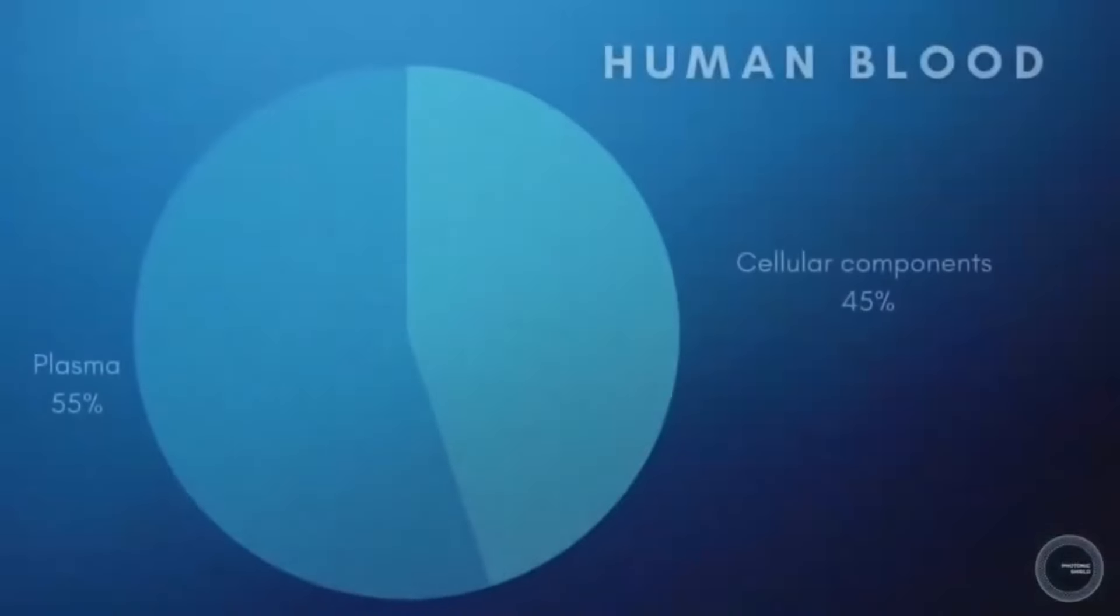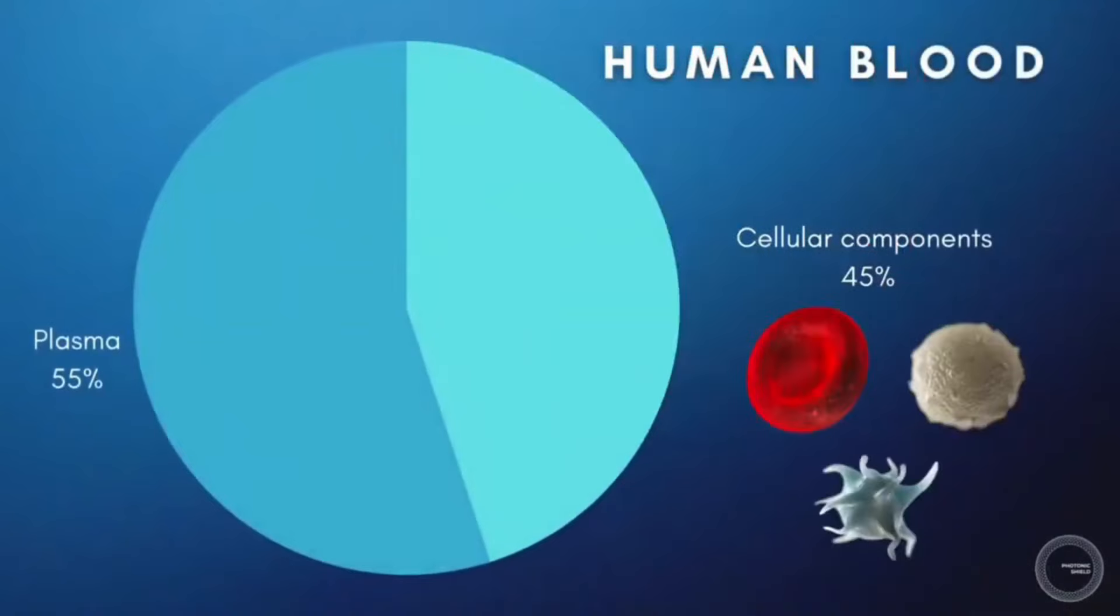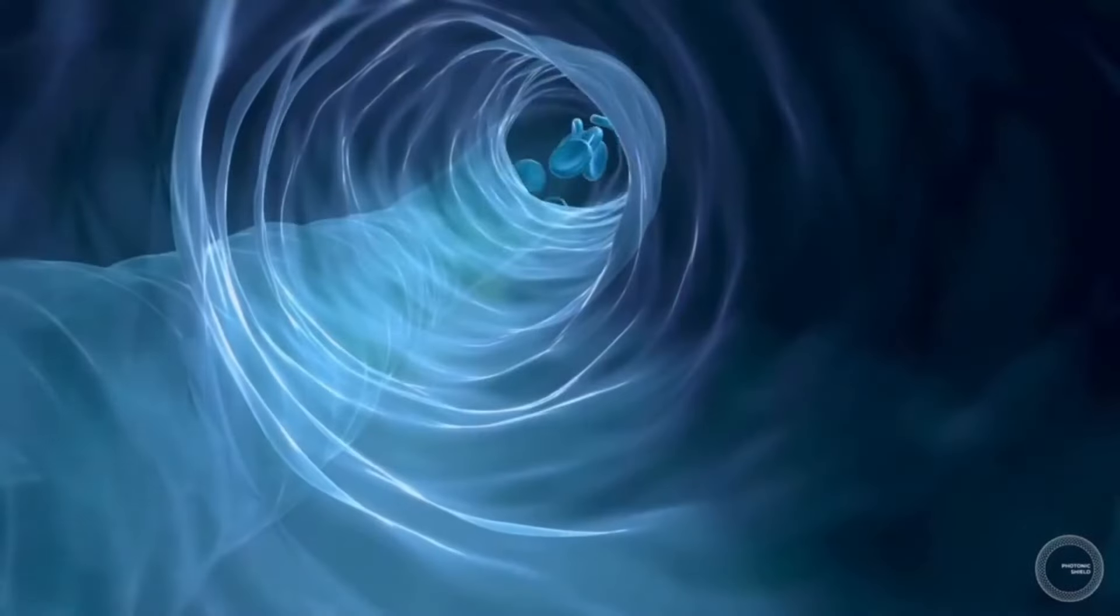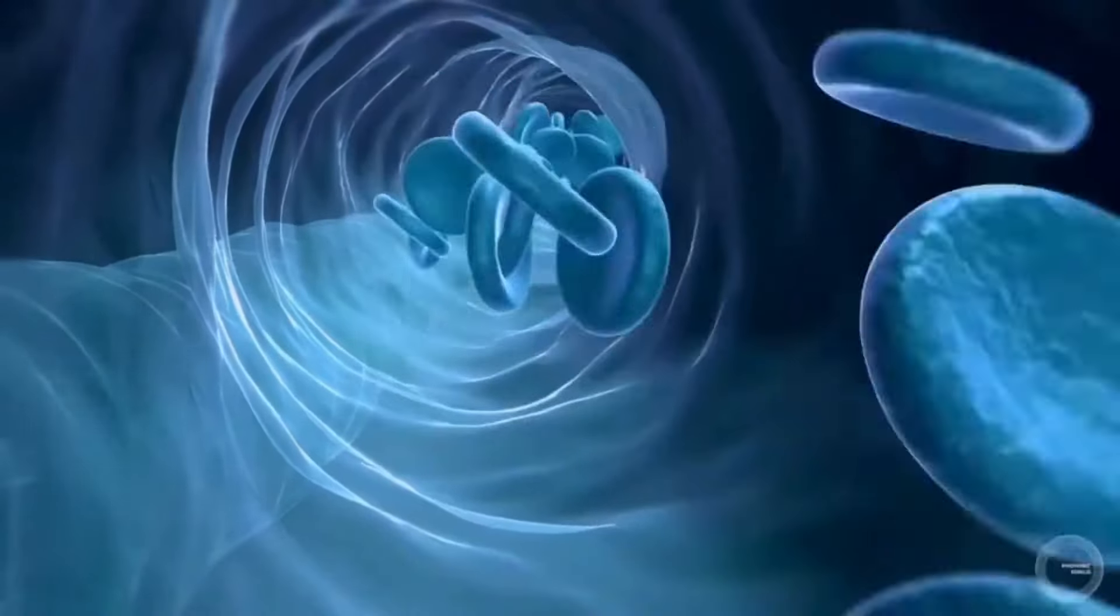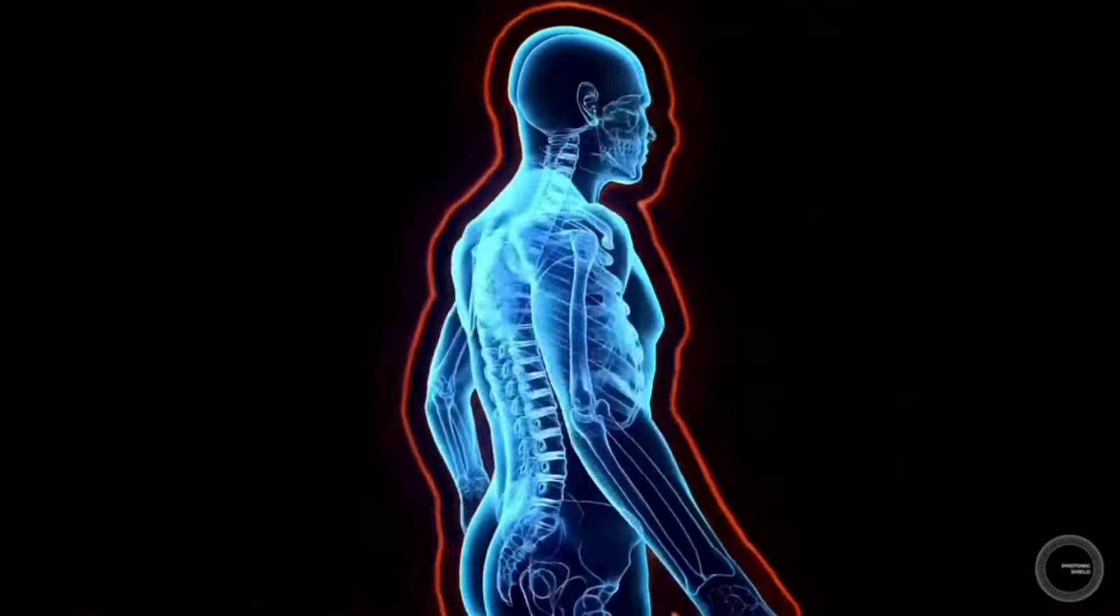Human blood is composed of 45% cellular components, namely red and white blood cells and platelets, and 55% plasma. Blood has many functions, including transporting oxygen, regulating body temperature, and supporting the immune system.